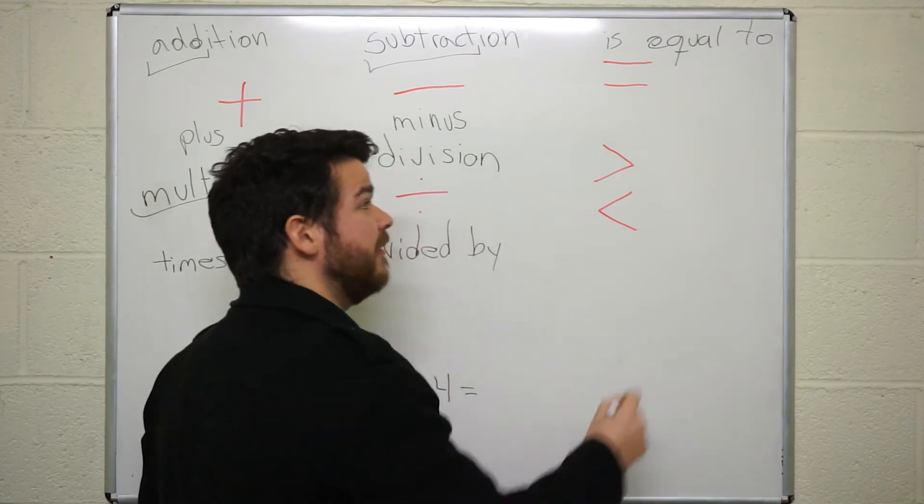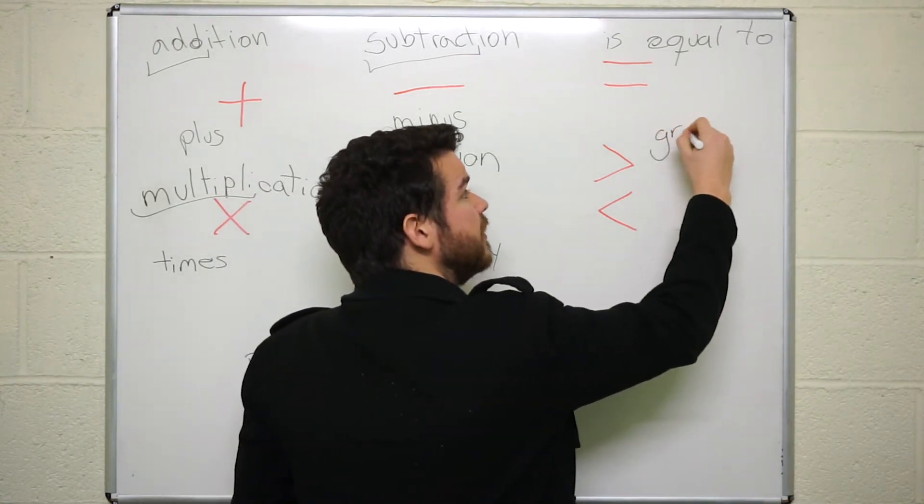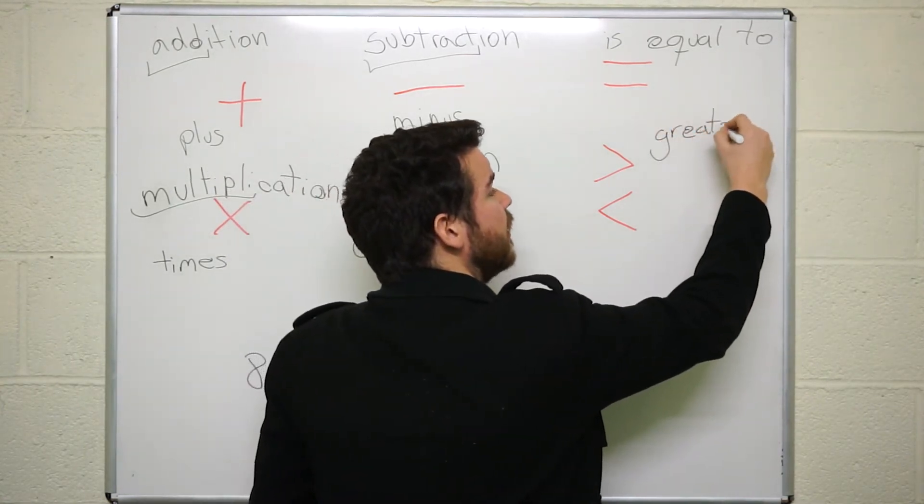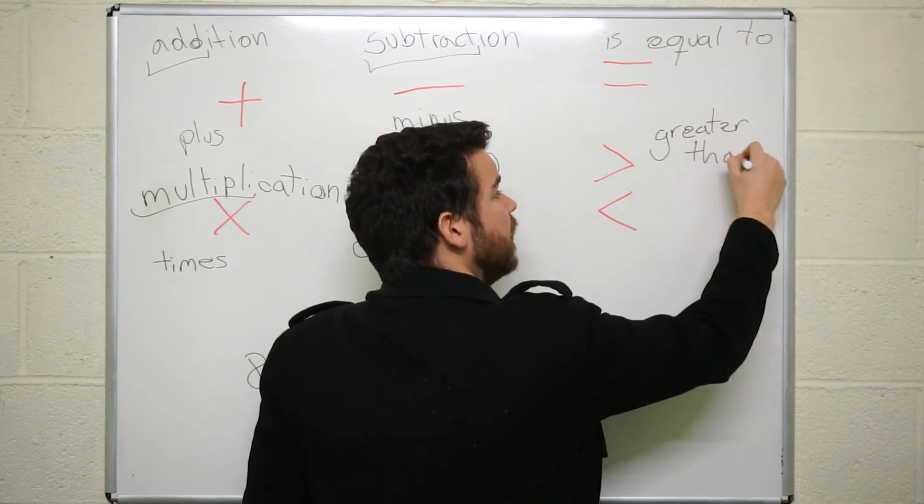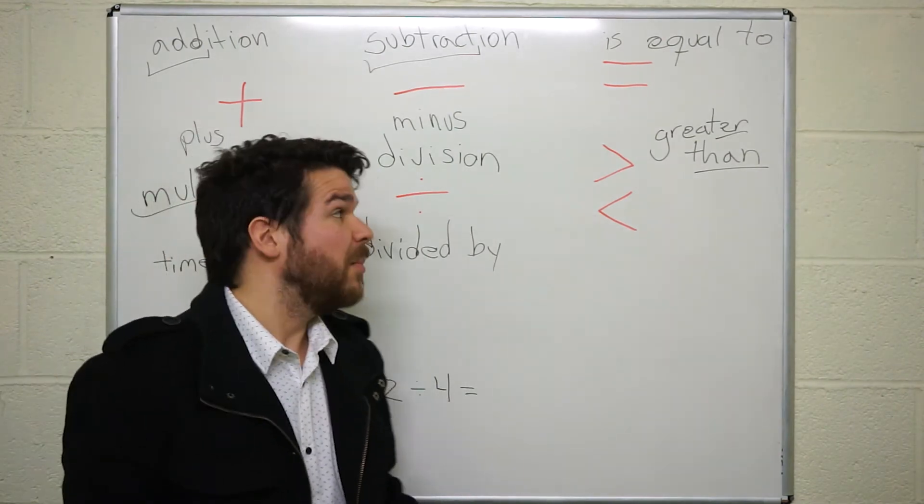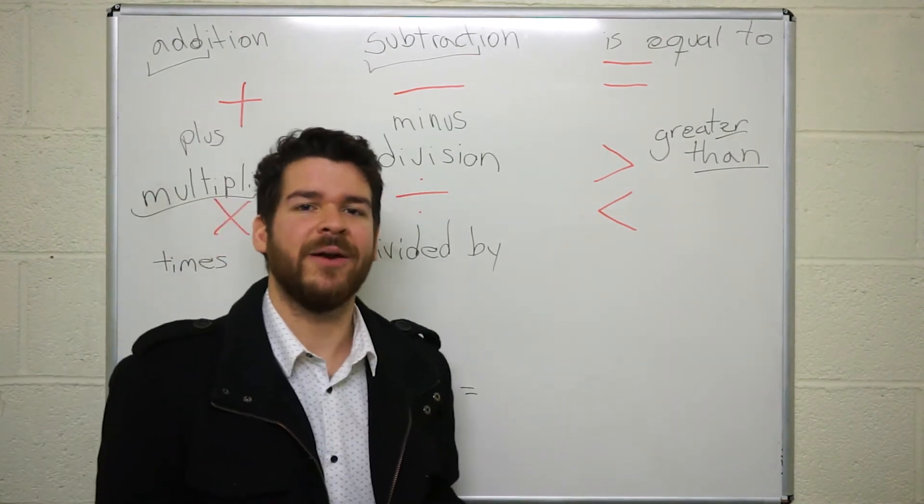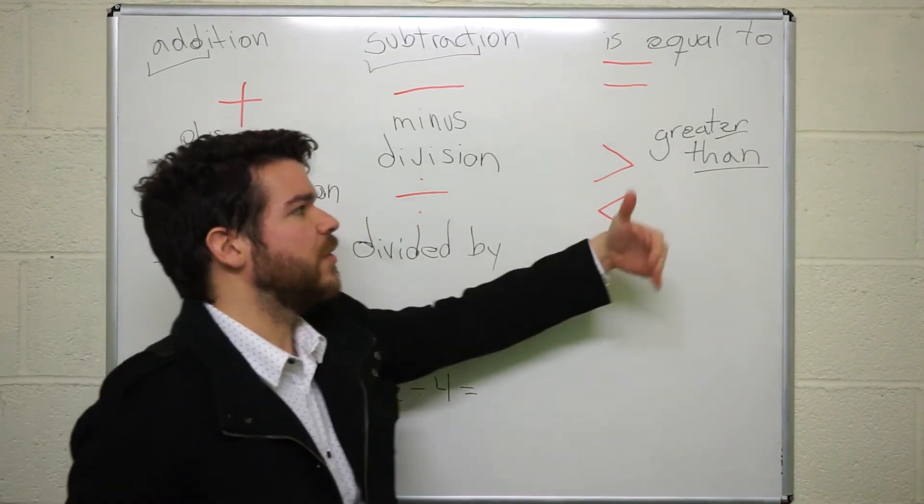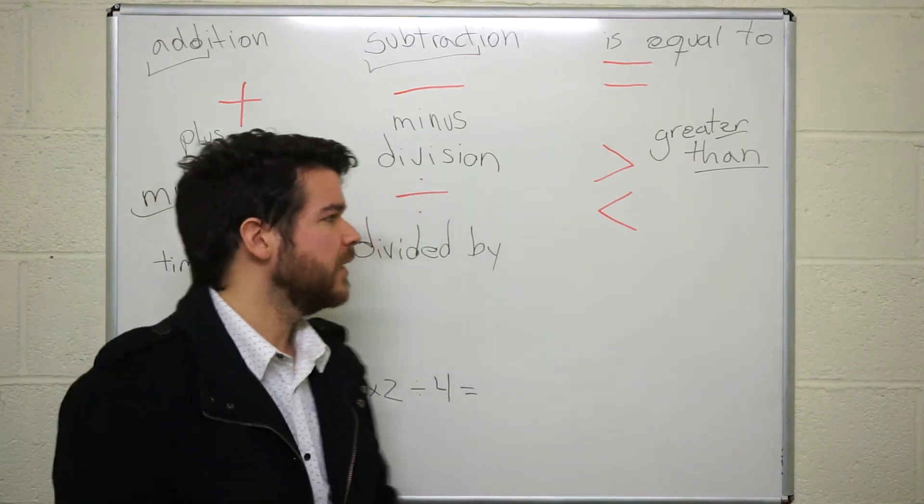Next we have greater than, greater than. It is used like this and it implies comparison. We are comparing something. Eight is greater than four, for example.